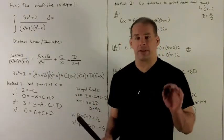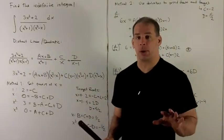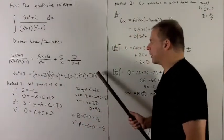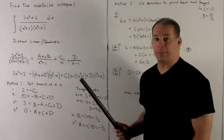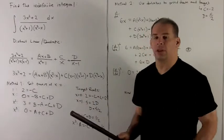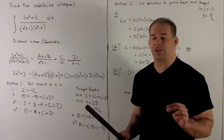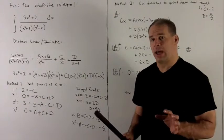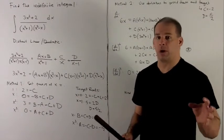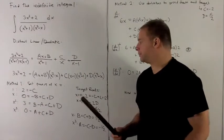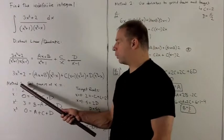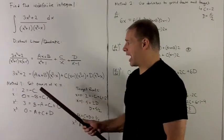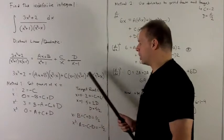Once we have this setup, everything proceeds as normal. We clear the denominators and then figure out how to find a, b, c, and d. There are two methods — they're more or less the same, but depending on how things are set up you may prefer one over the other. For Method 1, we take a polynomial on each side.